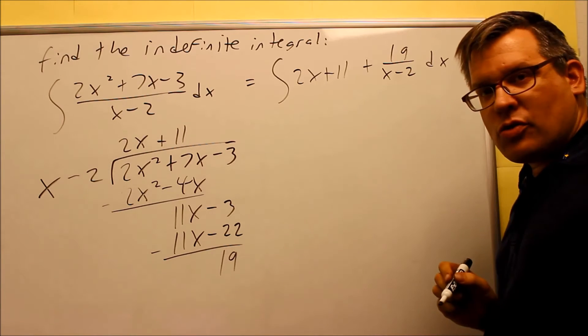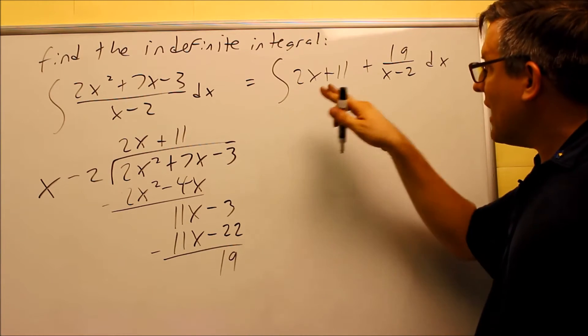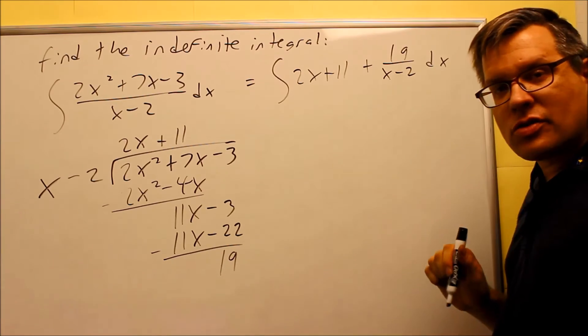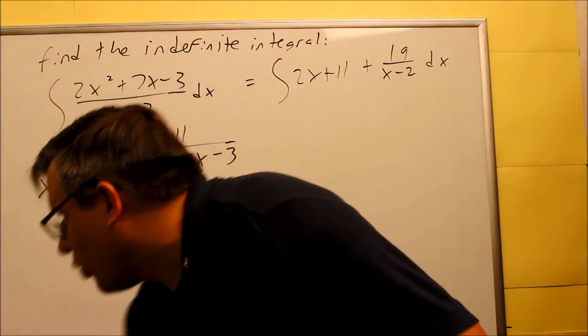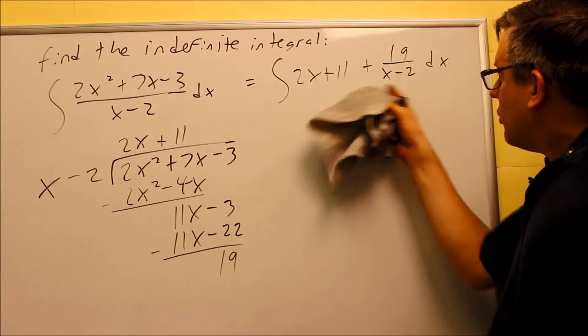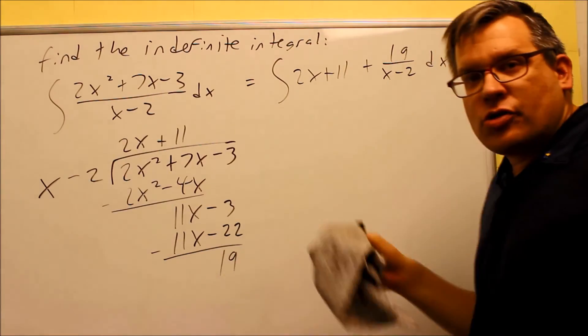So now we can say that this whole thing is equivalently equal to this one here. Since I split it up into three separate pieces, I can now integrate each of these three things separately, and that's the whole reason for doing the long division, because now you can do this a lot easier than doing the original problem.